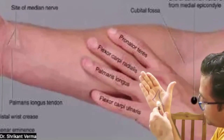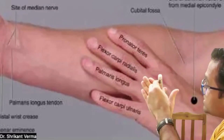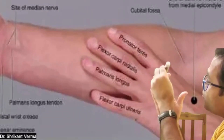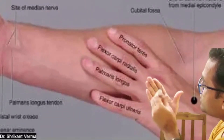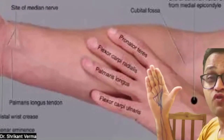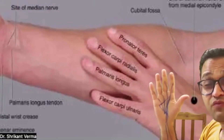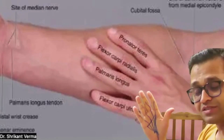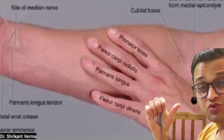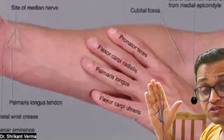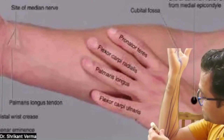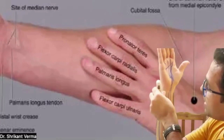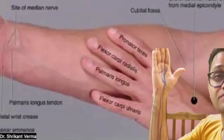The next muscle takes origin from the same point and reaches into the digits, dividing into four slips to four digits — so this is the flexor digitorum superficialis. The next muscle takes origin from the same point and goes towards the carpal bone on the ulnar side — flexor carpi ulnaris.